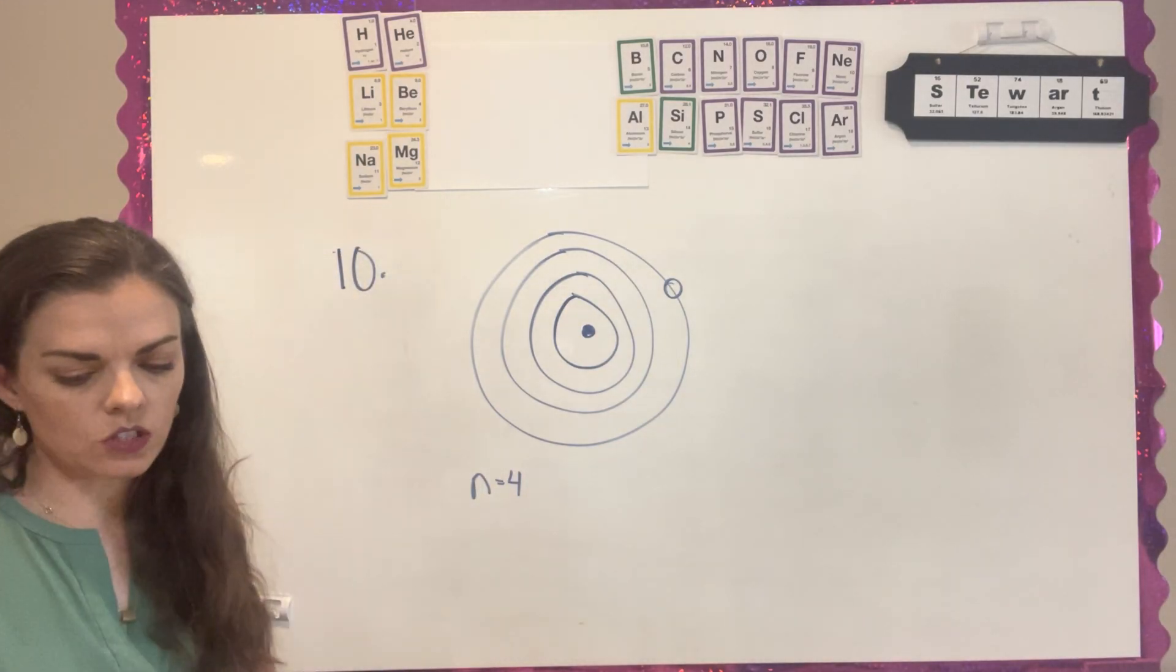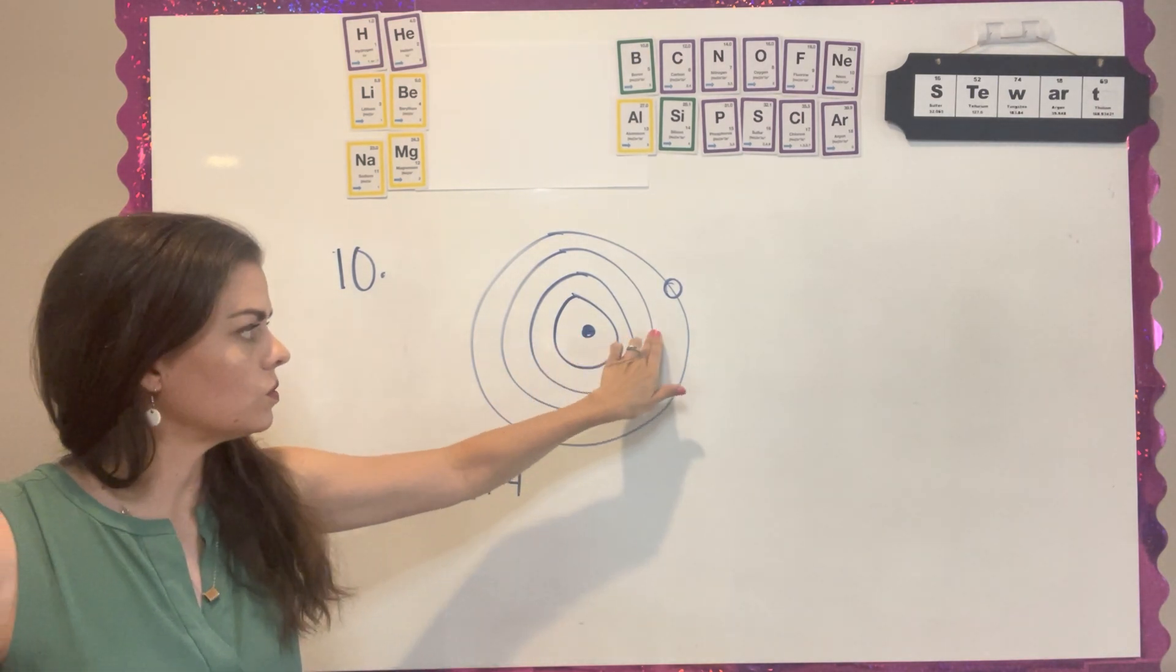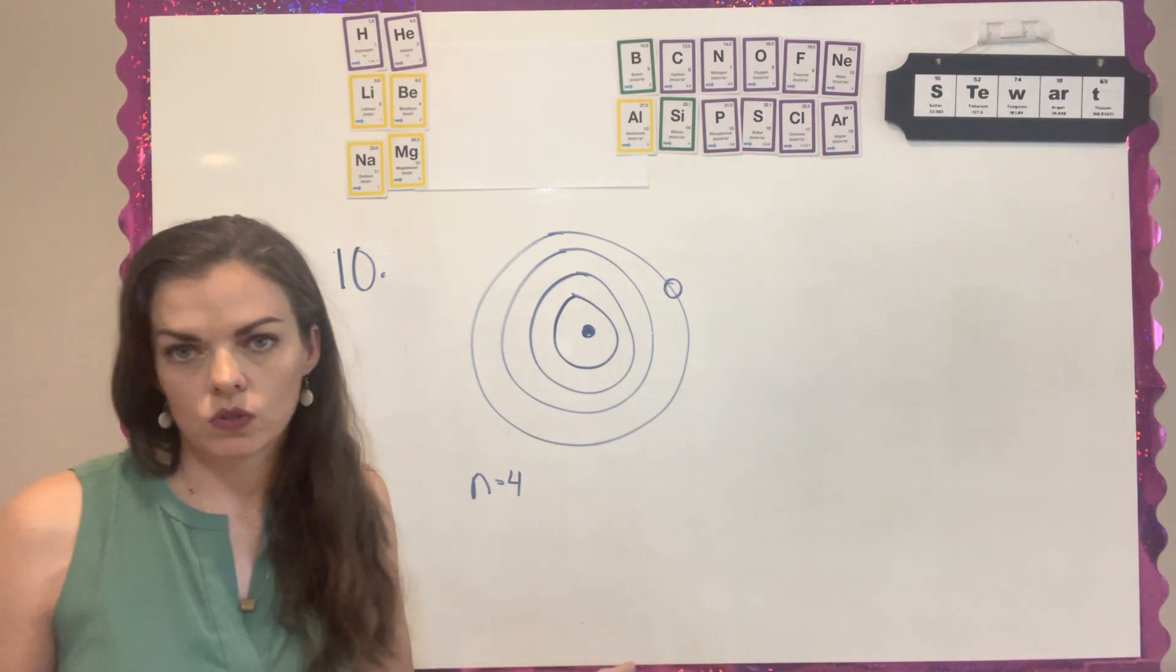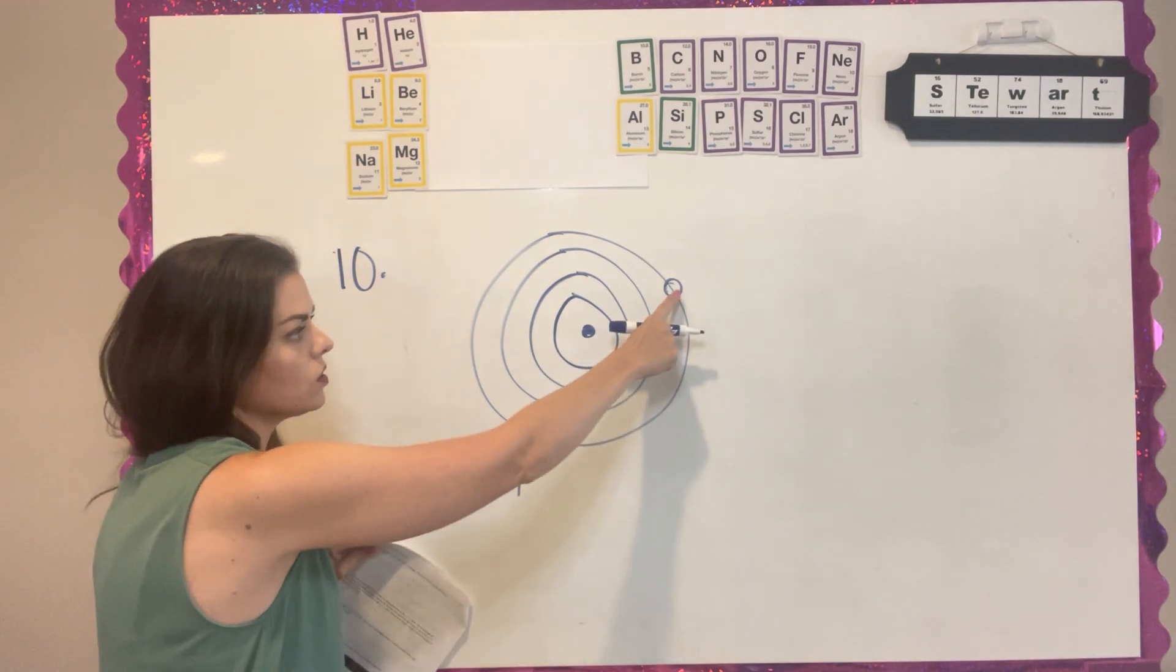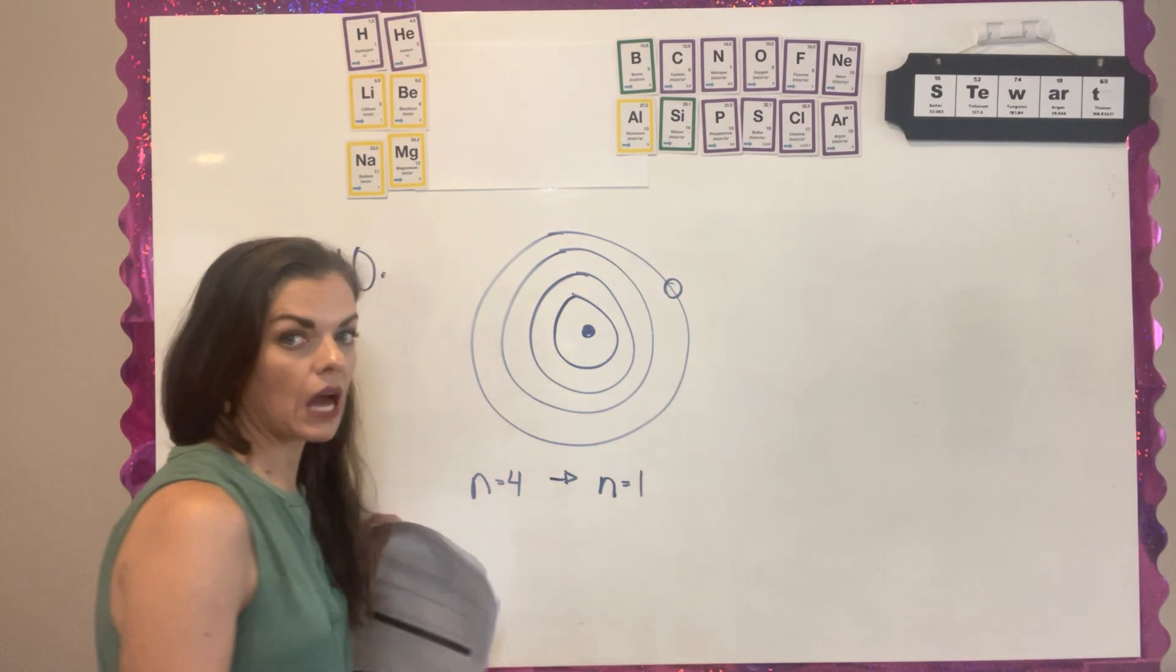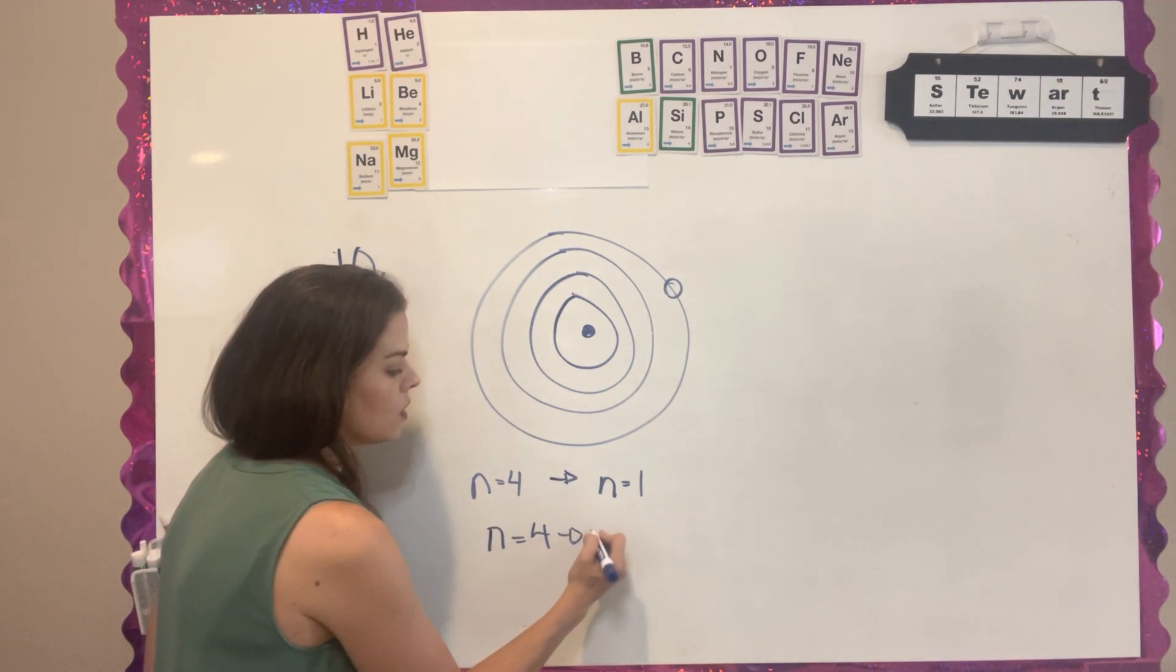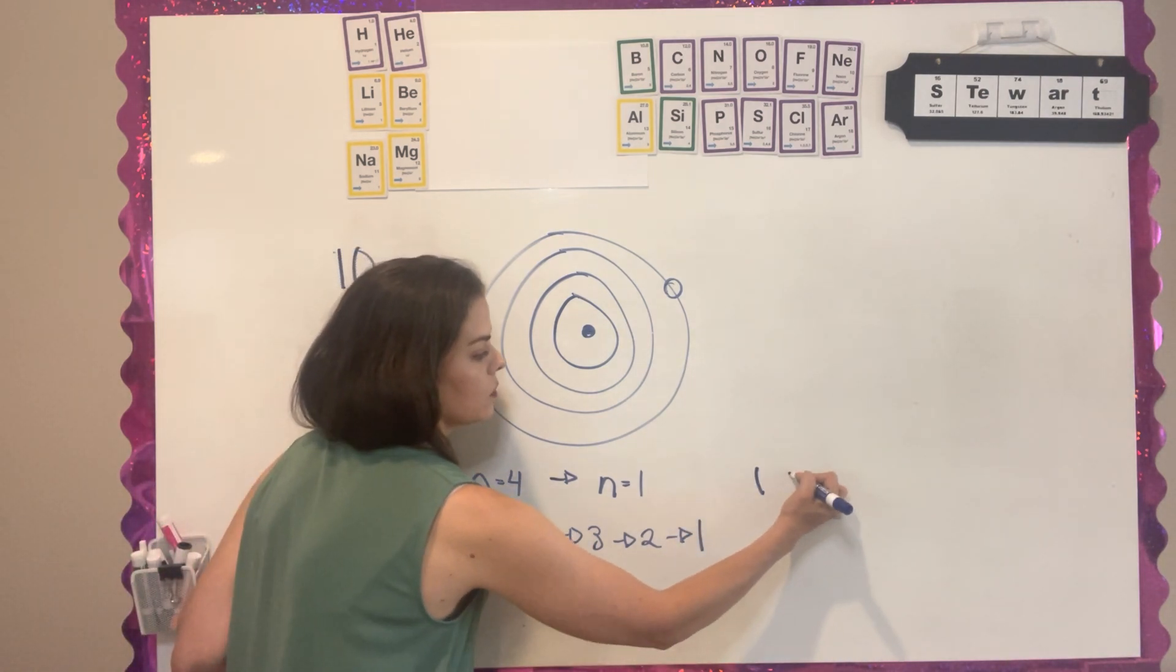Question 10 tells me I have an electron, and it's actually jumped out to n=4. So 1, 2, 3, 4. And it wants to know how many different possible wavelengths of light this electron could emit as it went back to its ground state. If it went from n=4, it could go from n=4 straight to n=1. That would be one wavelength of light it could emit. The other one, it could take the path of going from 4 to 3 to 2 to 1. This would be one wavelength. As it took this path, this is actually 1, 2, 3 wavelengths it would be releasing because it's dropping from 4 levels.